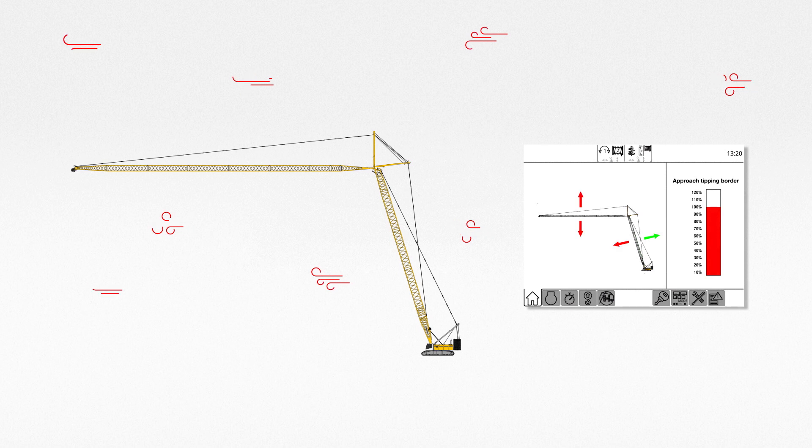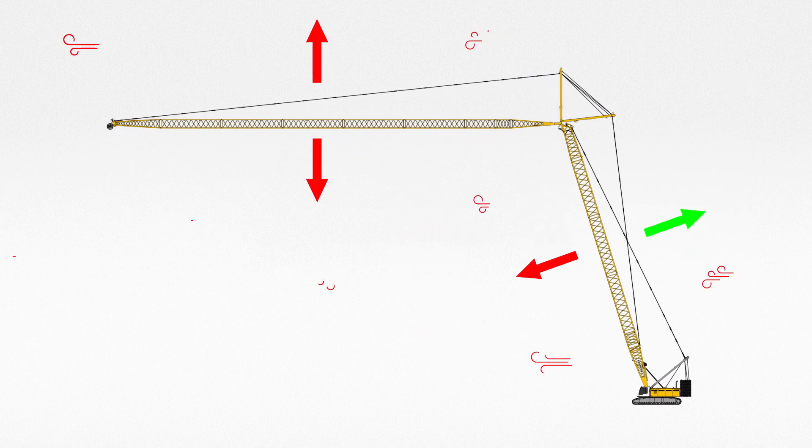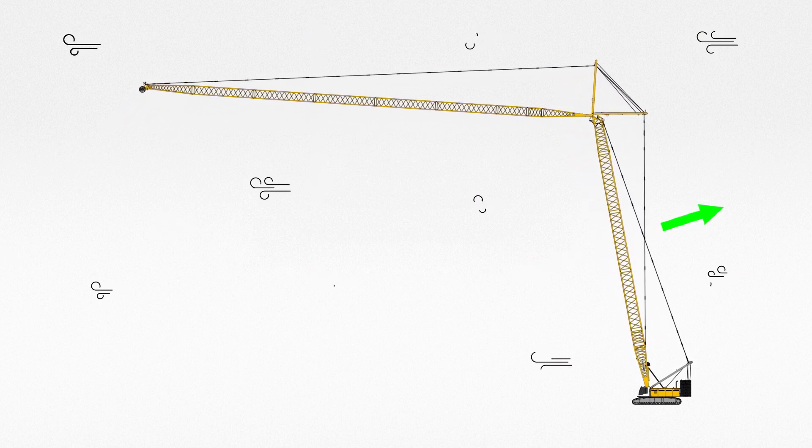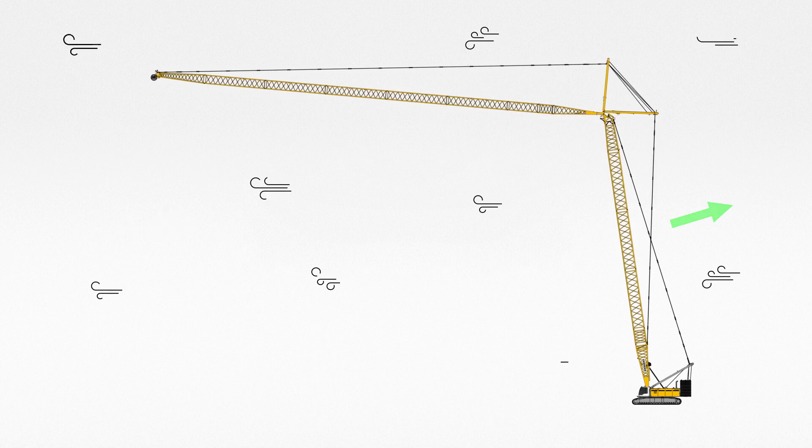The boom up and down aid stops operation in such situations and displays the correct movement to bring the crane back into a safe position. No other movement is possible until the operation is within the safe zone again.